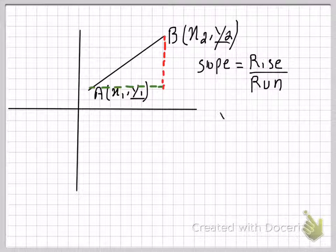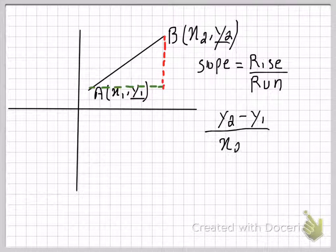So basically rise is equal to y2 minus y1 and similarly run will be equal to x2 minus x1. This will give you how much a line has risen over how much the line has ran.